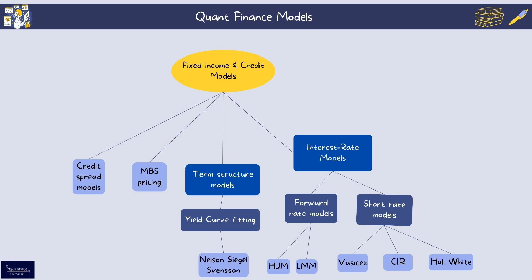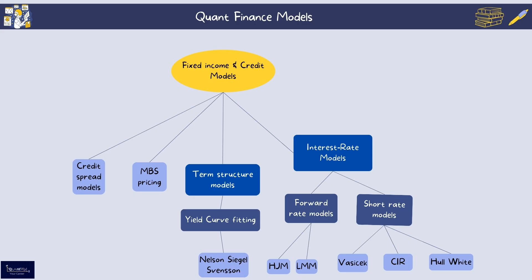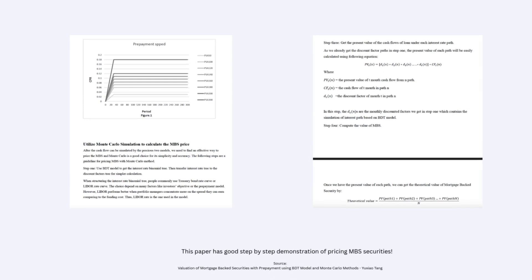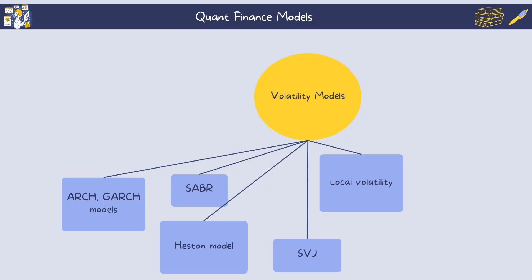There are other term structure models under affine term structure, within which Vasicek and CIR also fit as credit spread models, analyzing the difference in yield between corporate bonds and risk-free government bonds and attributing the spread to credit risk and other factors. Mortgage-backed securities (MBS) pricing models involve complex simulations to account for prepayment risk, interest rate changes, and default probabilities — models like Monte Carlo simulations are often used to price MBS accurately.